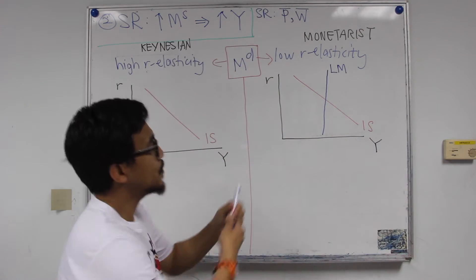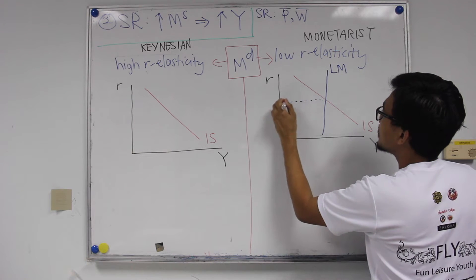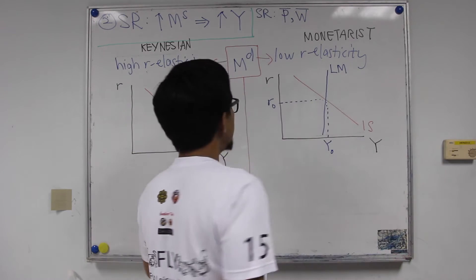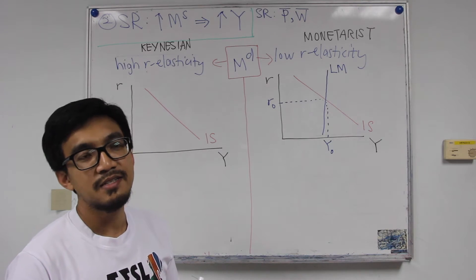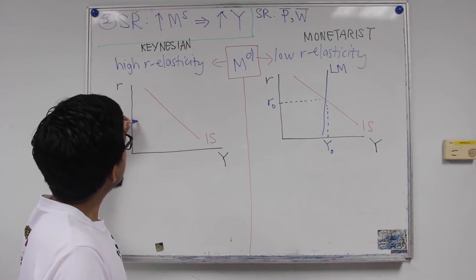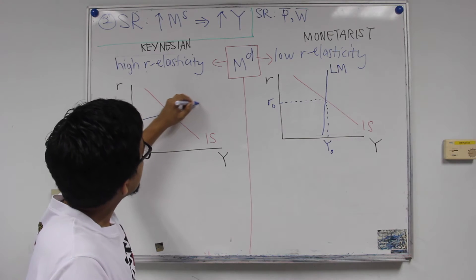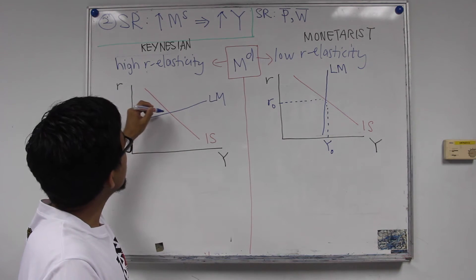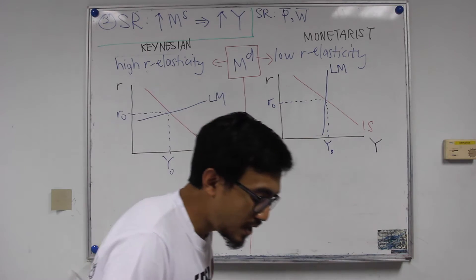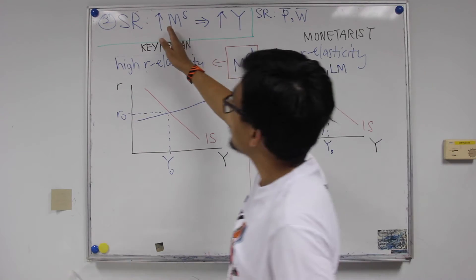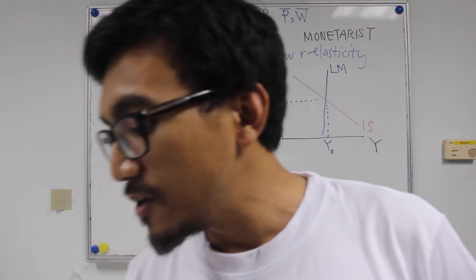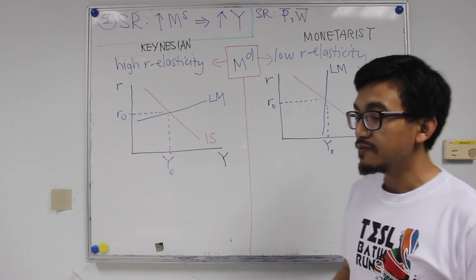This gives us an initial equilibrium at R0 and Y0 in the IS-LM framework for the monetarist case, while Keynesians also have R0 and Y0 but with a flat LM curve. Now let's look at what happens according to monetarists when a change in money supply strongly influences real variables like real output.